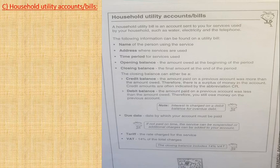We go to household utilities and accounts. Household utility accounts or bills are electricity, water, and telephone bills. The following information can be found on a utility bill: the name of the person using the service, the address where the service has been used, and the time period for the use - meaning which month you used it. Also the opening balance, which is the amount owed at the beginning of the period, and the closing balance, which is the final amount at the end of the period. The closing balance can either be a credit balance or a debit balance.